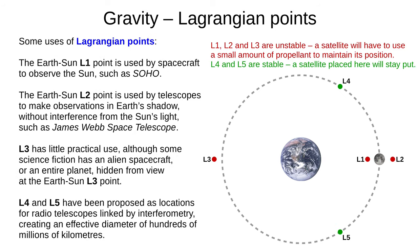Let's have a look at some uses for Lagrangian points. The Earth-Sun L1 point is used by spacecraft to observe the Sun, such as SOHO — by staying between the Earth and Sun, it has a close and clear line of sight to Earth to report its findings. The Earth-Sun L2 point is used by telescopes to make observations in Earth's shadow, without interference from the Sun's light, such as the upcoming James Webb Space Telescope. L3 has little practical use outside of science fiction, where sometimes an alien spacecraft or even an entire planet hides at the Earth-Sun L3 point. And L4 and L5 have been proposed as locations for radio telescopes linked by interferometry, creating an effective telescopic diameter of hundreds of millions of kilometres.